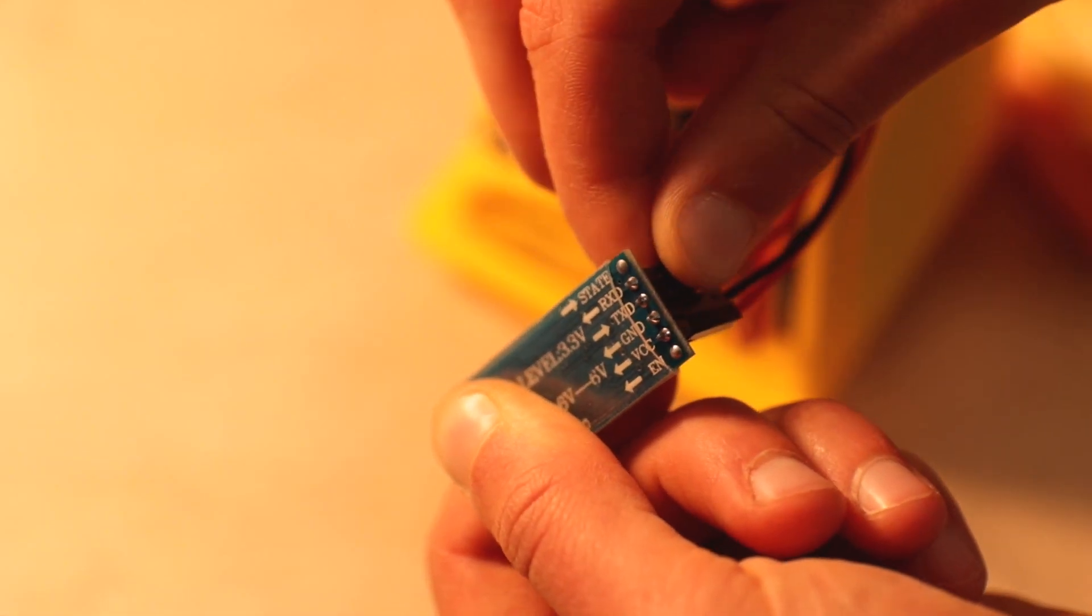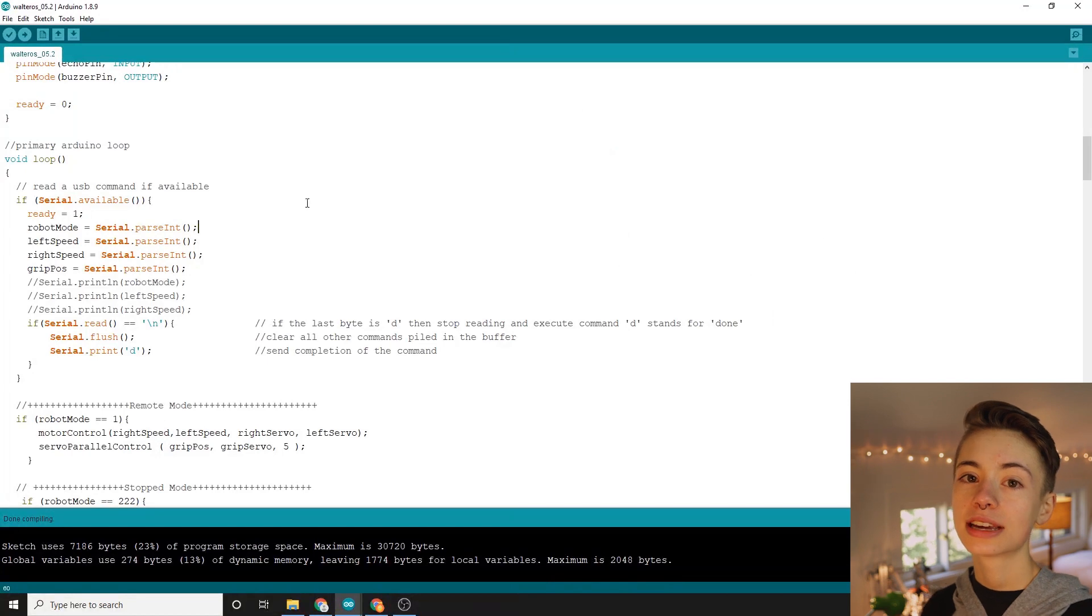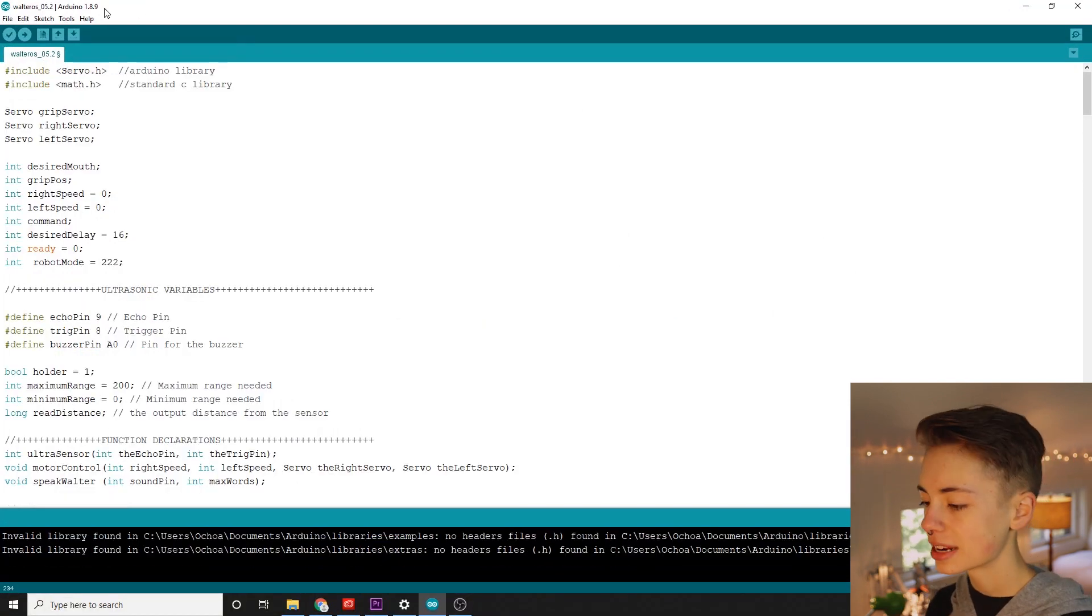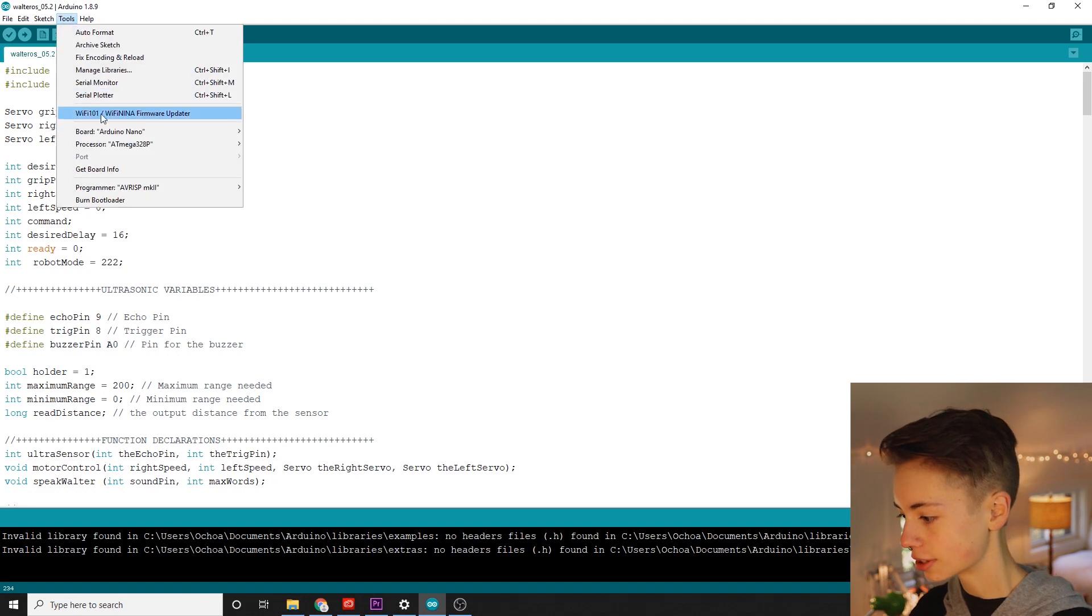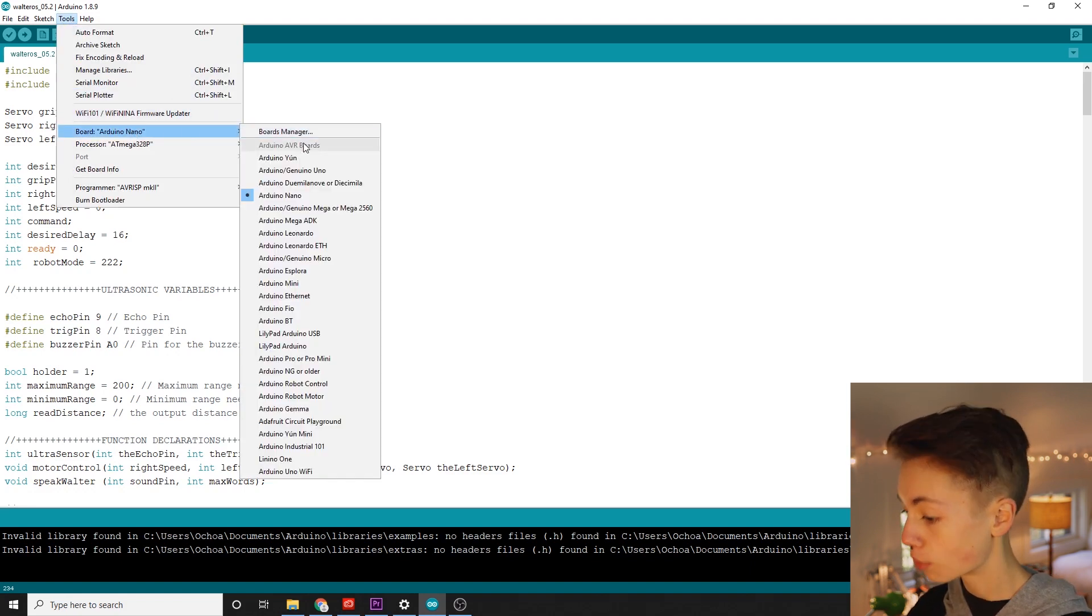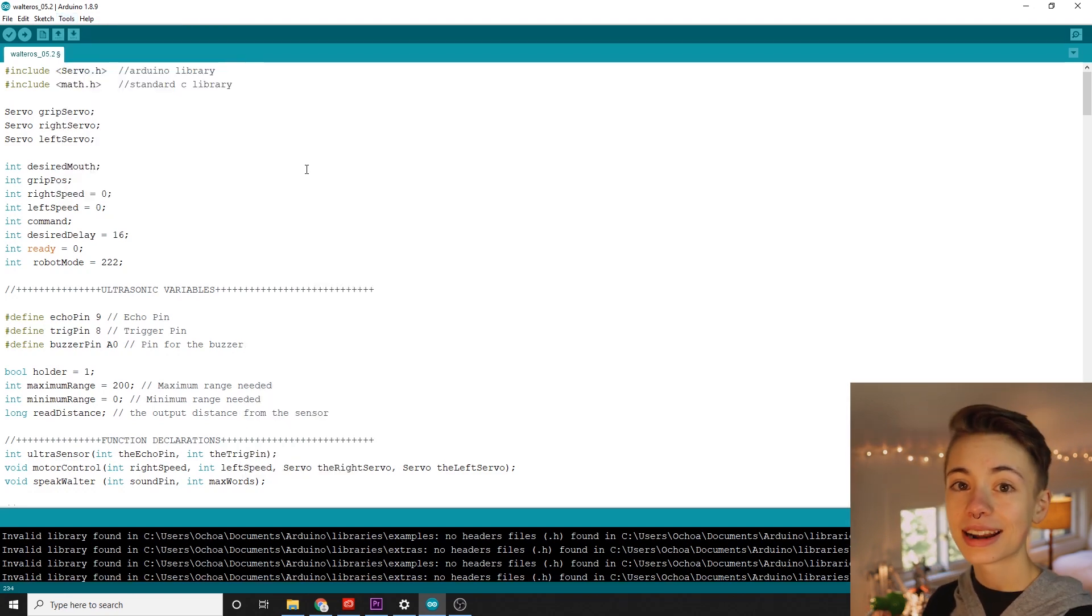One quick thing we got to do before downloading any code to the Arduino is unplug our Bluetooth module, because having it plugged in would interfere with the Arduino's communication with the computer. Before we download code, we also need to give the Arduino IDE some info about the board. First, we need to tell what type of board it'll be downloading to. Click Tools, then scroll over Board, and Little Bot uses the Arduino Nano so give that a good old click.